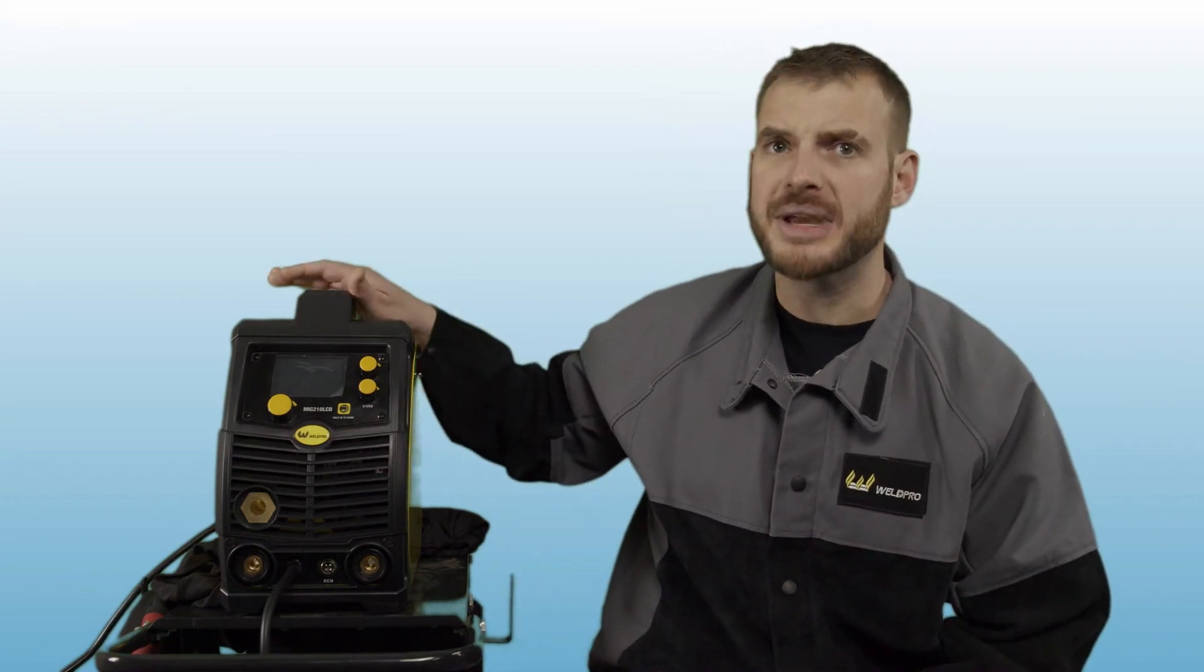Before we get started today you'll want to locate your stinger and your ground clamp in your accessory box that came with the MIG 210 LCD. At this time you won't need any of the other accessories that came with it. Those will come in later videos.